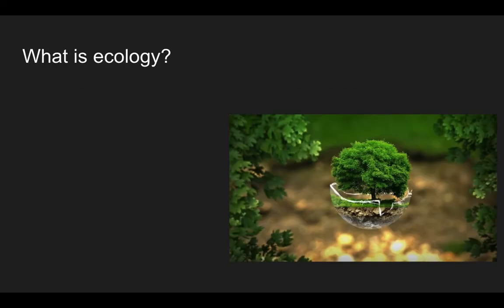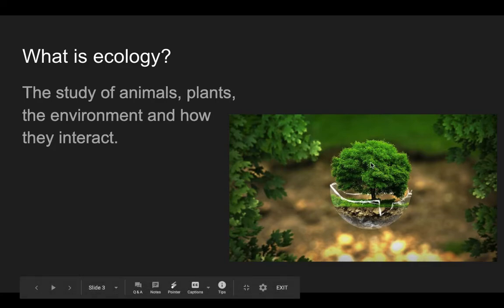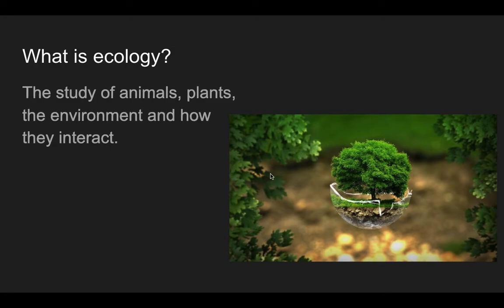So what exactly is ecology? To break it down as simple as we can, ecology is the study of animals, plants, and the environment, and how those things interact with one another. So when I look over here, I've got a tree. It's also interacting with the soil, the air, and then the hydrosphere, which would be the water that helps it grow.